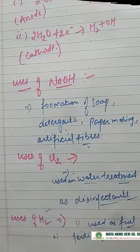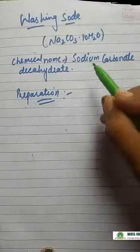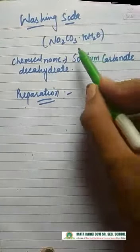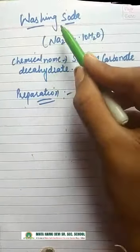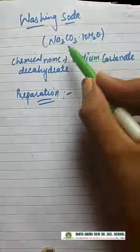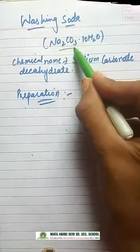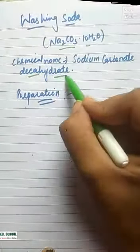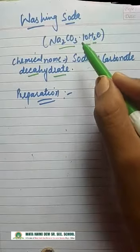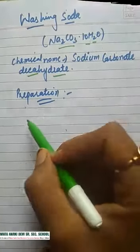The next salt is washing soda. Its common name is washing soda and the chemical or IUPAC name is sodium carbonate decahydrate. Sodium carbonate means Na2CO3, 'deca' means 10, and 'hydrate' means water molecule. So sodium carbonate has 10 water molecules associated with it.